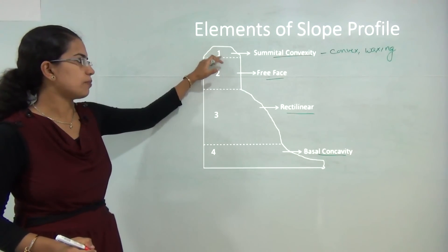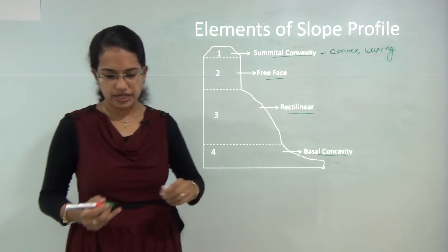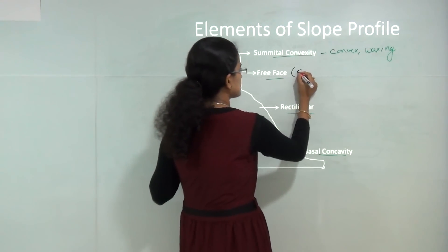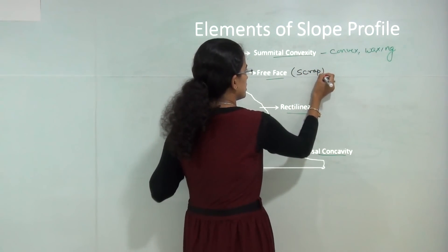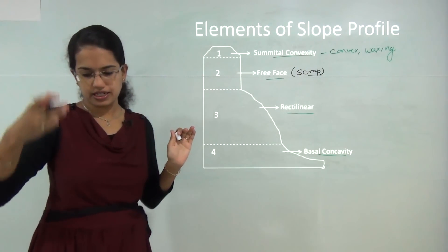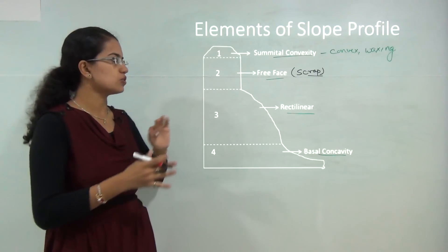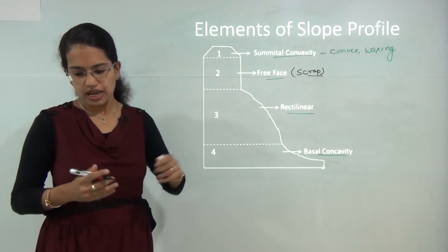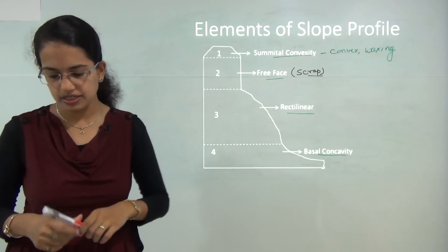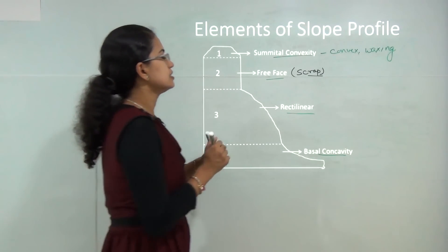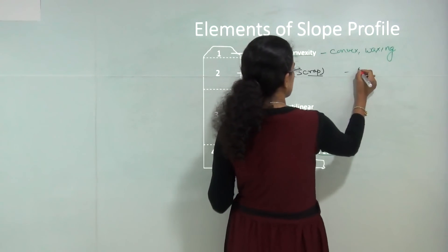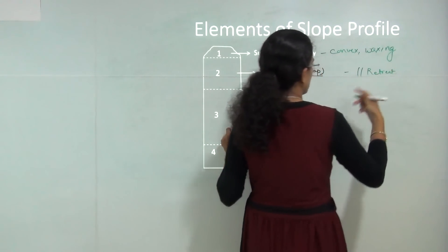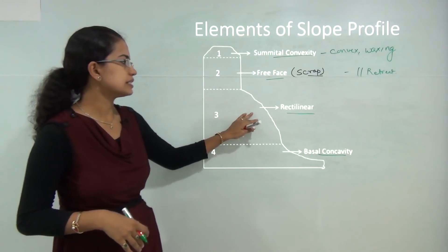The next element is the free face. The free face is usually perpendicular, wall-like, and is also known as a scarp. It is a region of steep declination where there is no debris or rock fall activity. It is predominantly common in areas of frontal erosion and regions of parallel retreat, which we will understand when we discuss the theories of slope development.